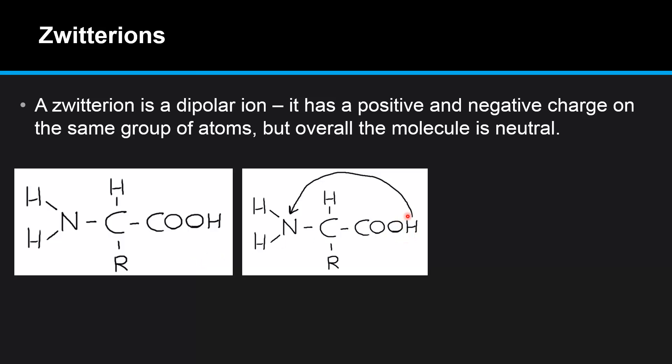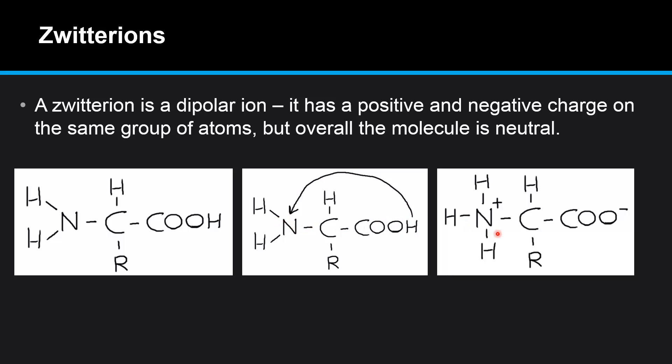What happens next is this hydrogen atom on the carboxyl group goes over to the amino group. And that leaves us with a positive charge on the amino group and a negative charge on the carboxyl group. But overall the molecule is neutral.